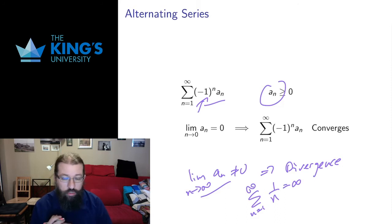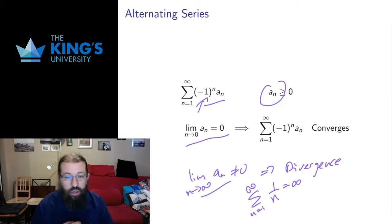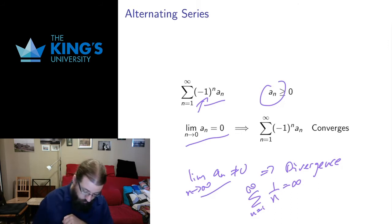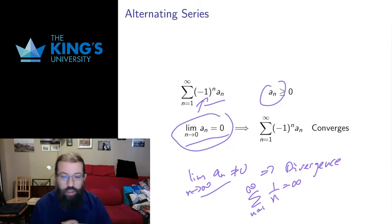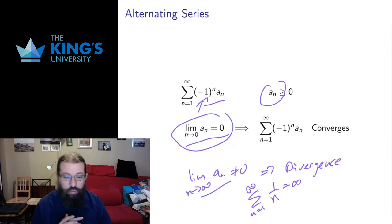For alternating series the situation is much nicer. An alternating series converges if and only if its terms go to zero. So all you have to do to test the convergence of an alternating series is take the limit of the terms: if that limit is zero it converges, if that limit is not zero it diverges. This is called the alternating series test. Not only are they an interesting class of series, they're a very easy series to test for convergence.